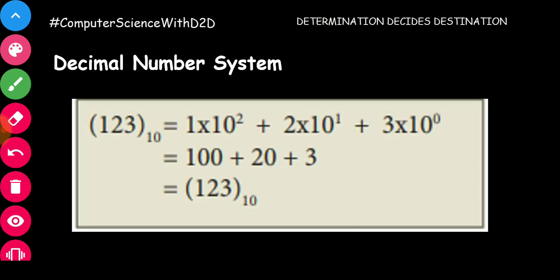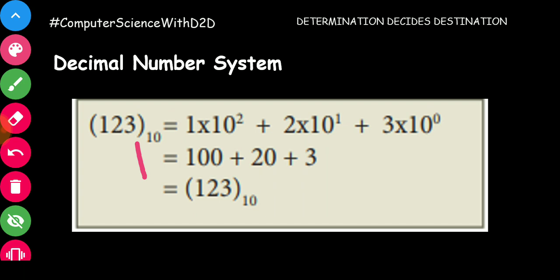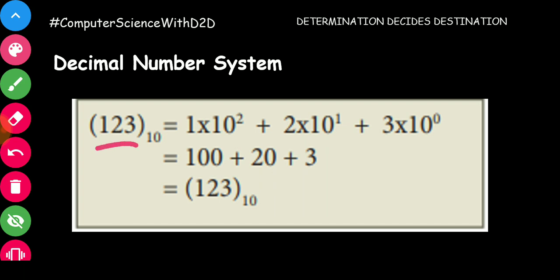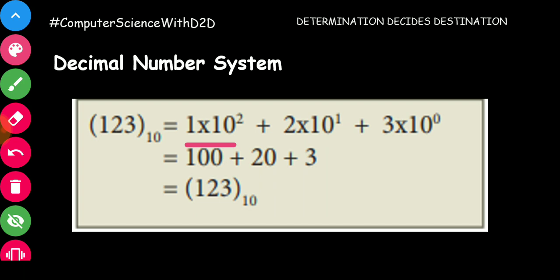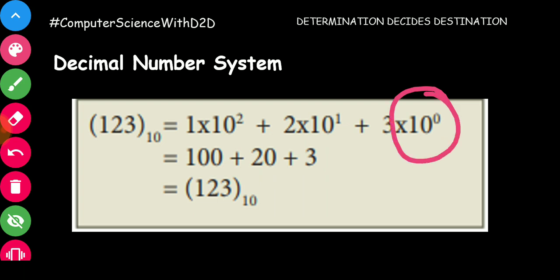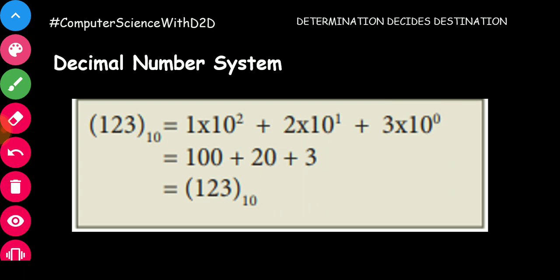Let's look at a practical example. Take 123 base 10. Starting from the rightmost position: 3 is at the 0th position, 2 is at the 1st position (tens), and 1 is at the 2nd position (hundreds). So, 3 × 10⁰ + 2 × 10¹ + 1 × 10² = 3 + 20 + 100 = 123. Anything raised to the power of 0 is 1, so 3 into 1 is 3. This is the concept — just revision.